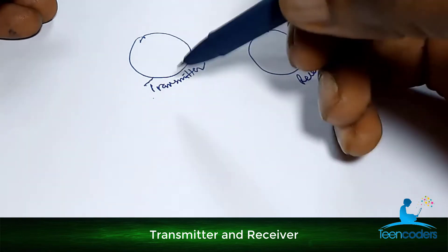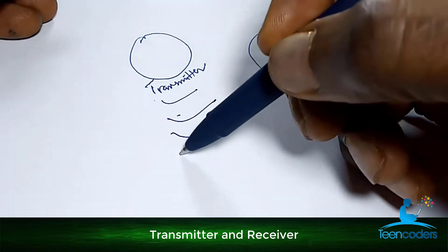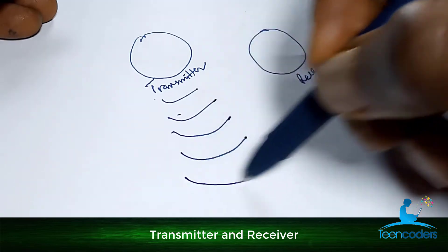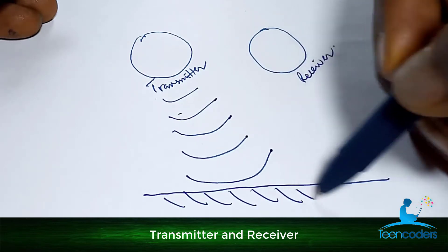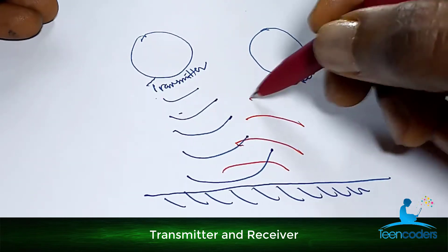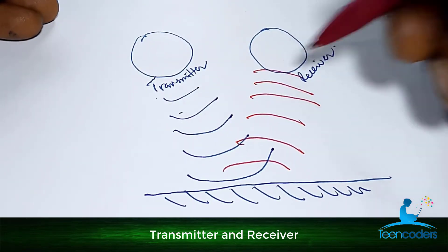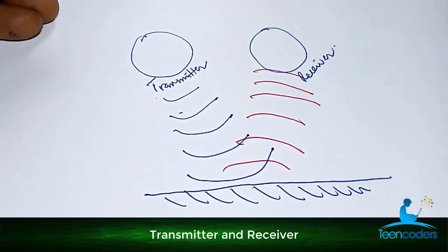The transmitter will emit sound waves at a particular frequency. And when this hits an obstacle, it bounces back and is received by the receiver.